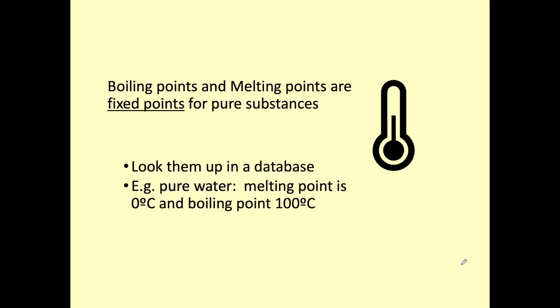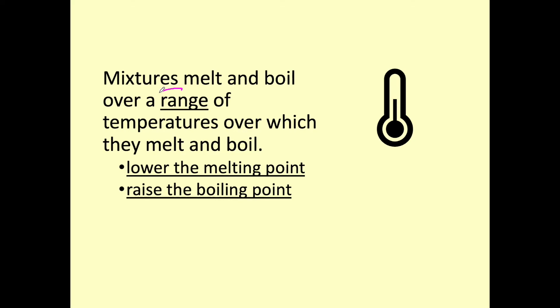We're now going to look at how we can determine whether something is a pure substance or a mixture. We can use boiling points and melting points to help us with this. For a pure substance they are fixed points — we can specify the exact temperature at which they melt and boil. For example, water has a melting point of 0°C and a boiling point of 100°C, recorded in a database. With mixtures, they melt and boil over a range of temperatures — for example between -2°C and 2°C — so that range indicates an impure substance.